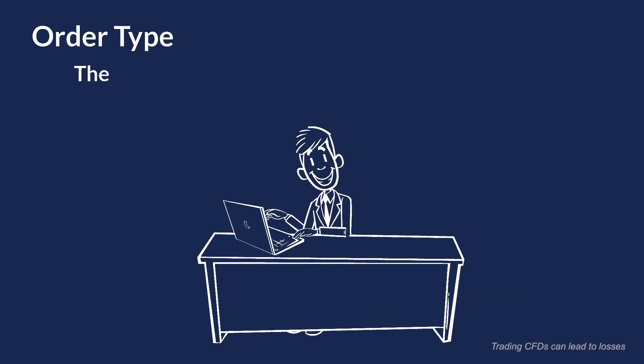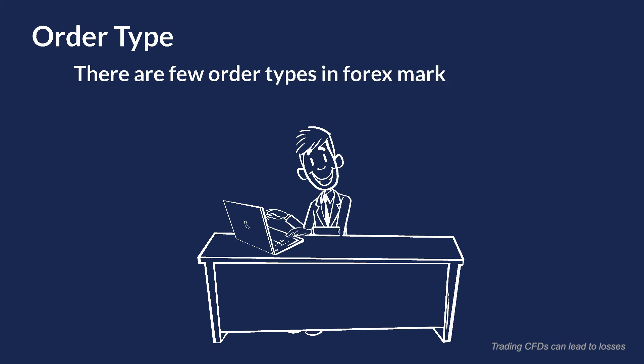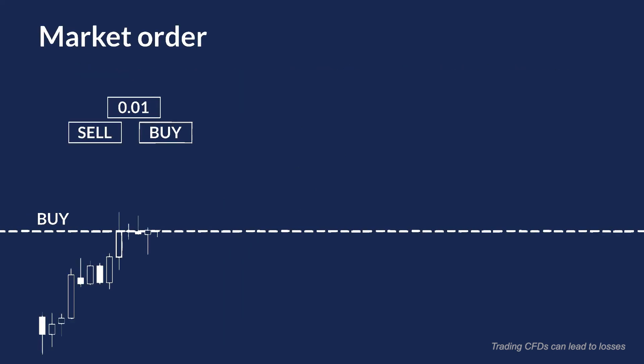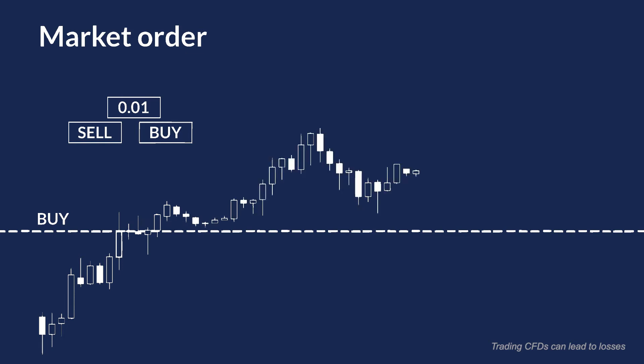There are a few order types in the Forex market. A Market Order is an order which is instantly executed at the price offered.